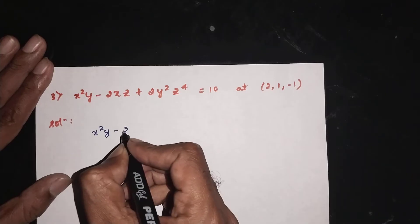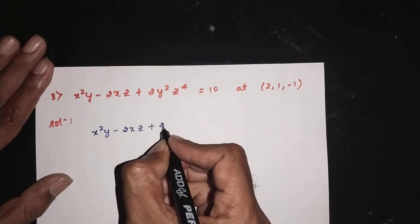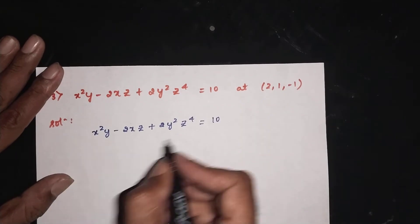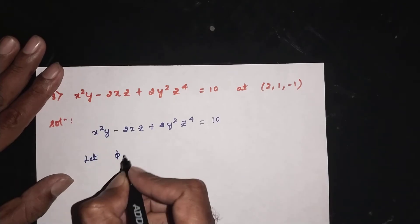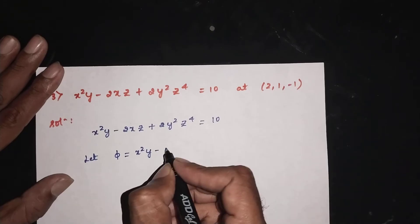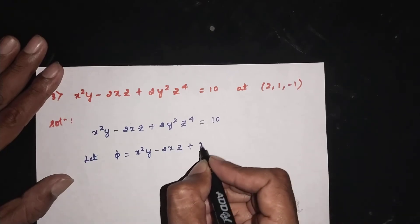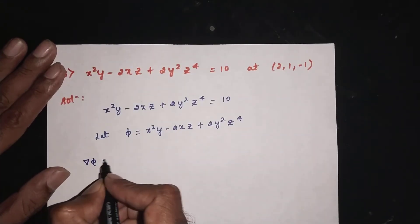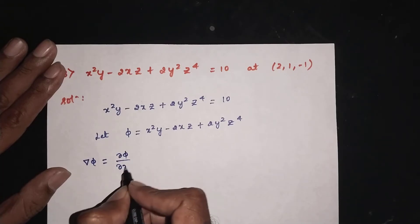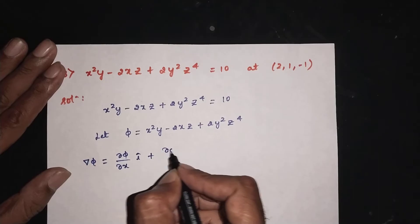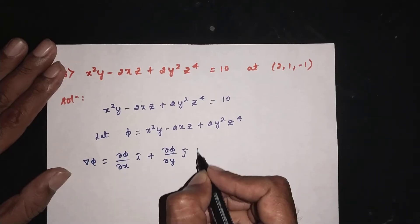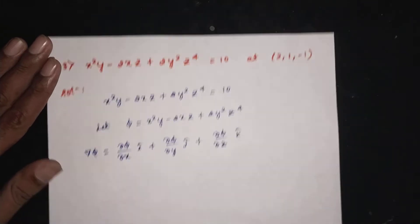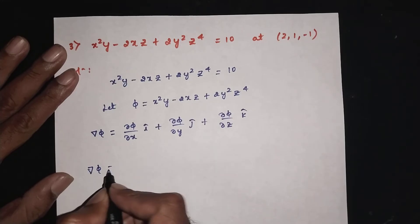Let phi equal x squared y minus 2xz plus 2y squared z to the power 4, which equals 10. We need to find del phi. The formula for del phi is: del phi equals dou phi by dou x times i, plus dou phi by dou y times j, plus dou phi by dou z times k.